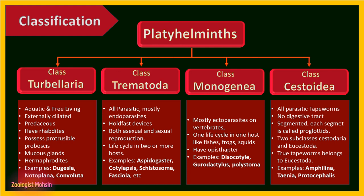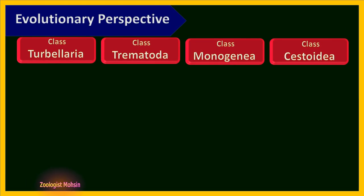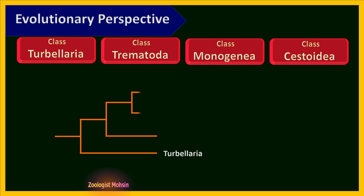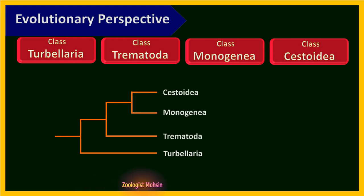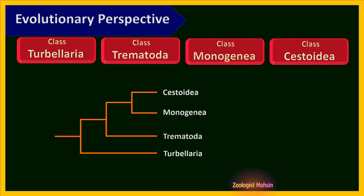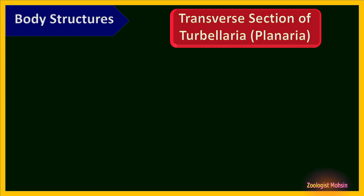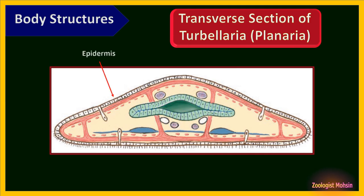Note that Turbellarians are not parasites, but the other three classes — Trematoda, Monogenea, and Cestoidea — are all parasites. From an evolutionary perspective, this phylum appears paraphyletic: Turbellarians diverged initially, then the other groups diverged further into two branches — Trematodes, and then Cestoids and Monogeneans.